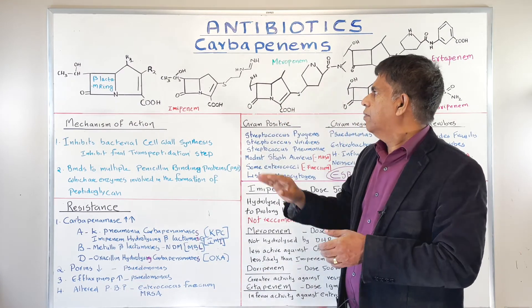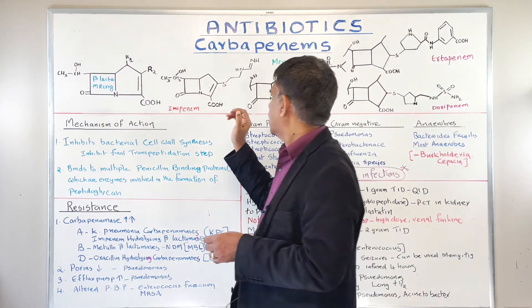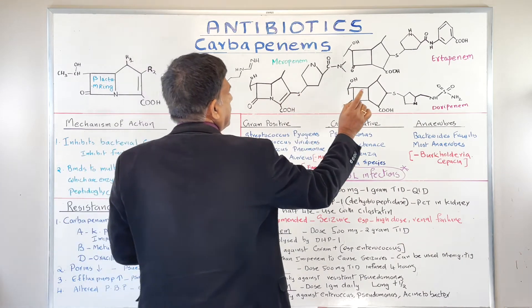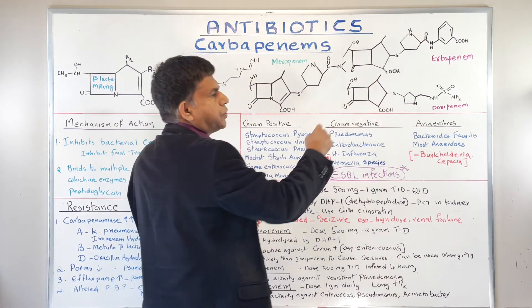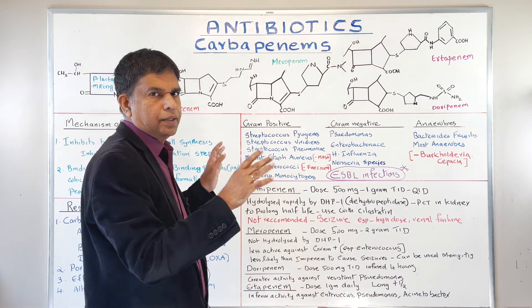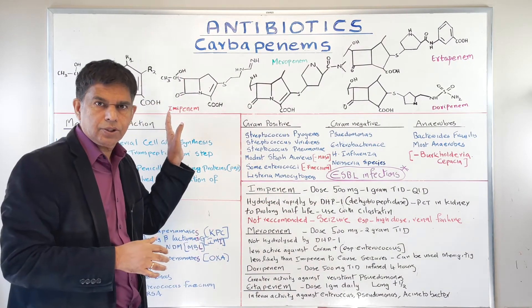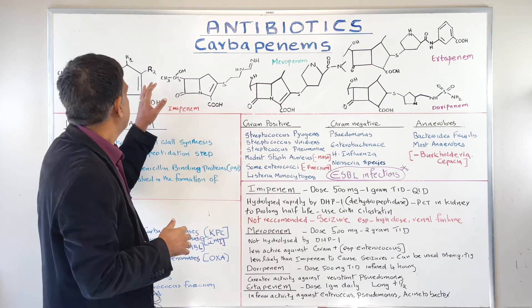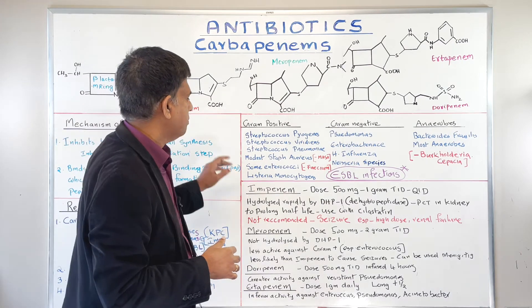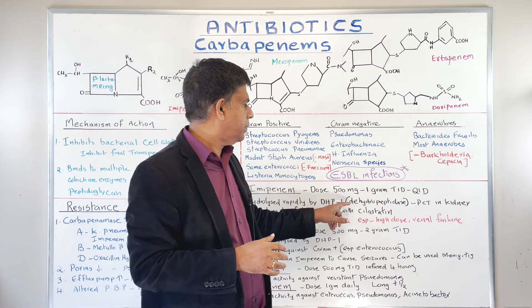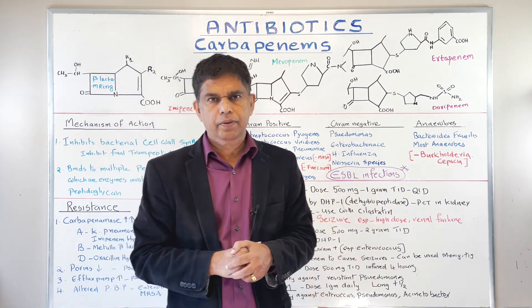All the other drugs — meropenem, ertapenem, and doripenem — have that R1 structure, so they cannot be hydrolyzed by DHP-1. That is a very important point. When comparing meropenem, ertapenem, and doripenem, there are two structures that differ: R1 and R2. The key takeaway is that imipenem lacks R1 and can be hydrolyzed by dehydropeptidase-1.